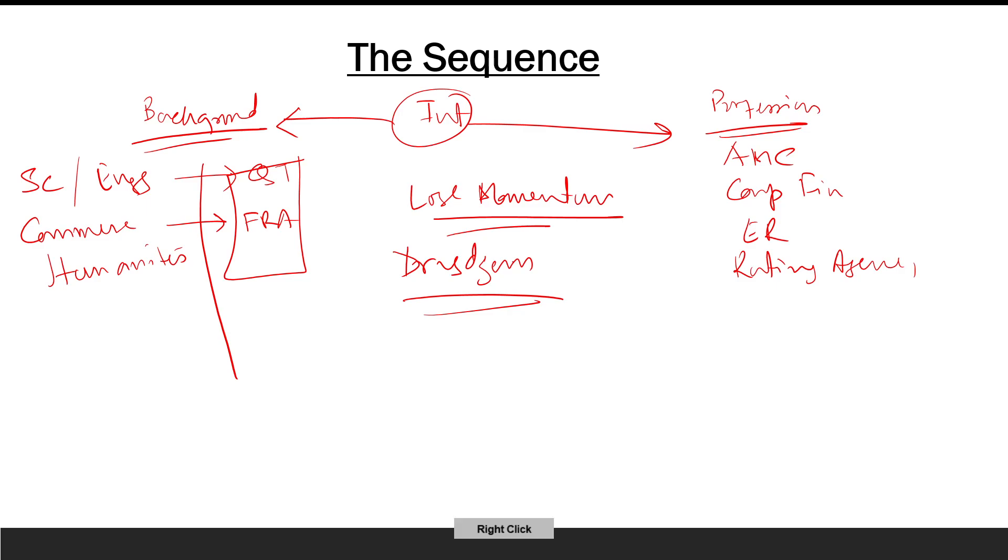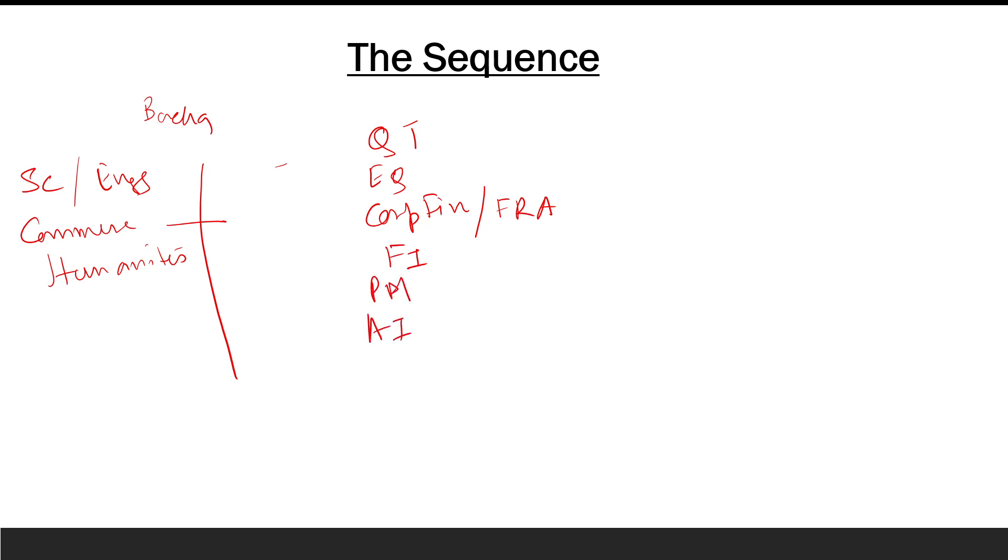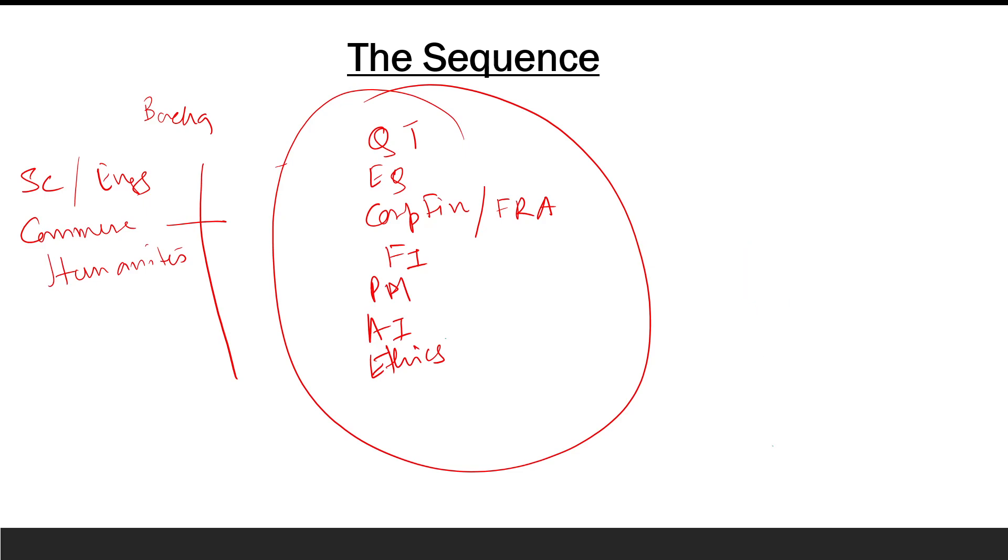Now, that being said, is there any particular study sequence that I can suggest? Well, I may suggest, but please don't take this as a sacrosanct study sequence. It's nothing more than a pointer. So if I were you, the way I would put this forth is that I would be starting off with QT, followed by equity, followed by corporate finance, or I may do FRA as well. One of these two, followed by fixed income and then portfolio management, alternate investment, and ethics. Now, while I say so, please also understand that there will be certain subject areas where I would say please spread those subject areas as much as possible, which is to say that I want to treat these subject areas as floater subject areas. For example, ethics. For example, FRA.